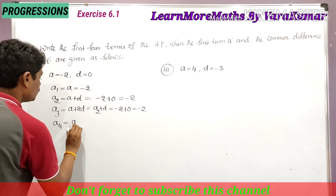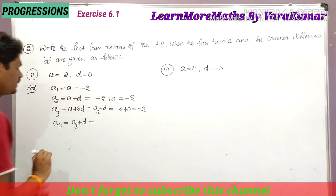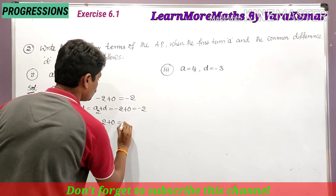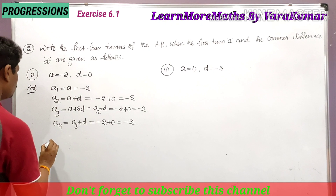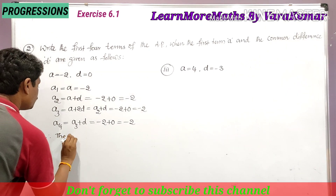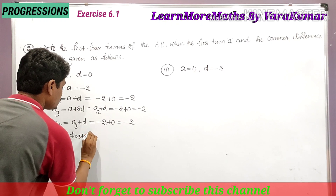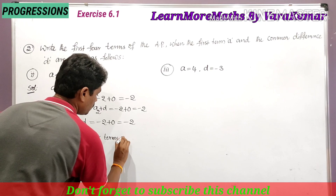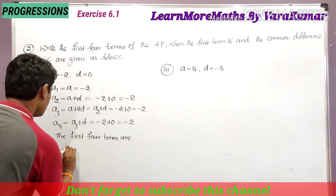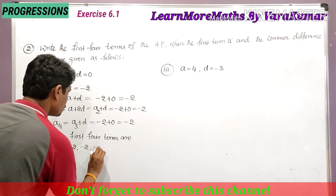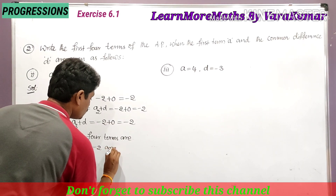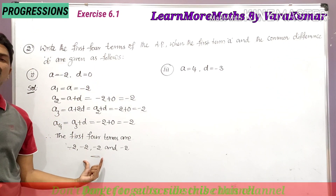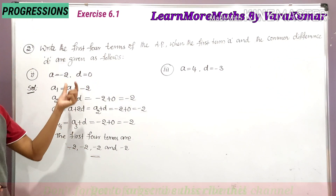The fourth term a4 is equal to a3 plus d, and since a3 is minus 2 and d is 0, it is also minus 2. Therefore the first four terms are minus 2, minus 2, minus 2, and minus 2. Since the common difference is 0, all terms are equal.